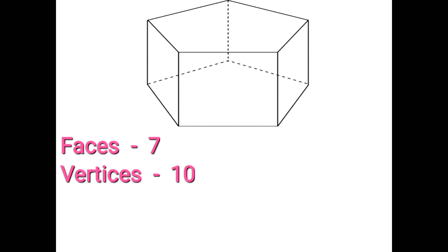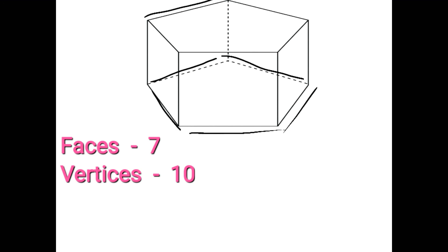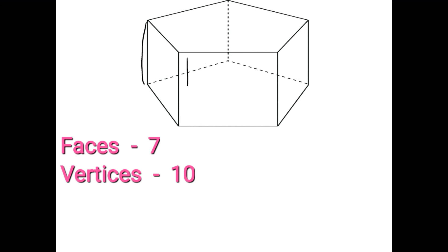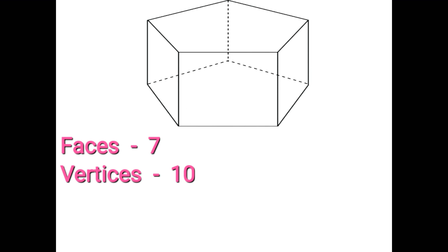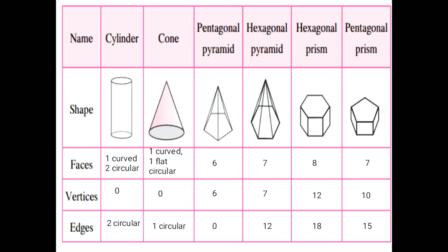Last is edges. Number of edges is 15. Counting: 1, 2, 3, 4, 5 — remember, edges means sides — 5 sides. Then 6, 7, 8, 9, 10. Then the other 5 remain: 11, 12, 13, 14, 15. I am getting number of edges or sides is 15. Pentagonal prism is on the last column; write the answers on the last column.